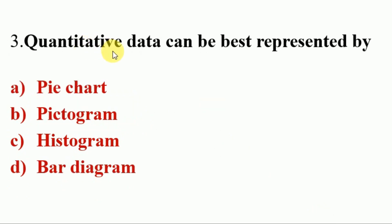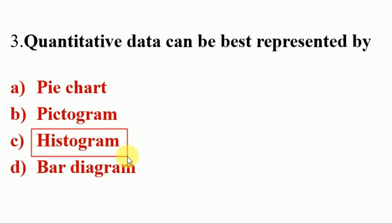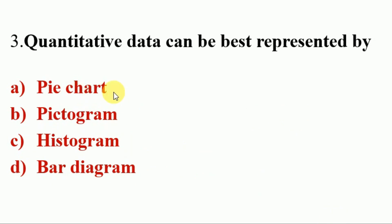Next question. Quantitative data can be best represented by — Options A. Pie Chart, B. Pictogram, C. Histogram, D. Bar Diagram. Answer is C. Histogram. So quantitative data can be best presented by Histogram. The rest of the options — Pie Chart, Pictogram, and Bar Diagram — are used to represent qualitative data.